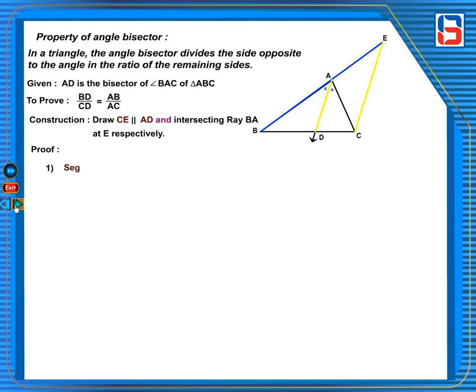Proof: Step 1. Segment CE parallel to segment AD, therefore, angle BAD is congruent to angle AEC by corresponding angles.